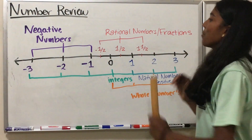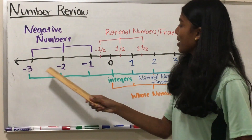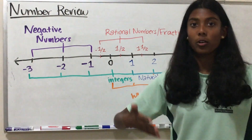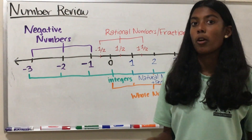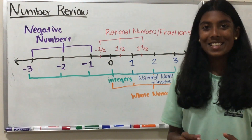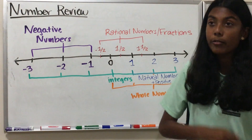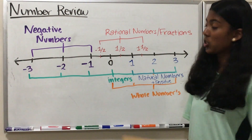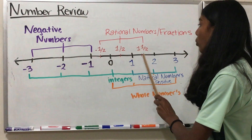Going back to our number line, let's start with our types of numbers. We have negative 3, negative 2, and negative 1, which fall into our negative numbers category. Negative numbers are all the numbers that fall to the left of zero — they are less than zero. Then we have zero, which is neither positive nor negative. And then we have our rational numbers, or fractions, which are represented in red: negative 1 half, 1 half, and 1 and 1 half.